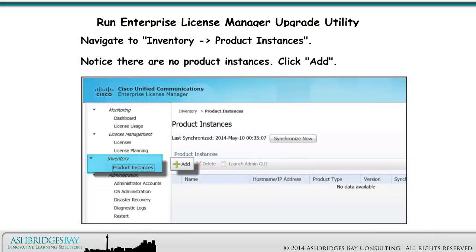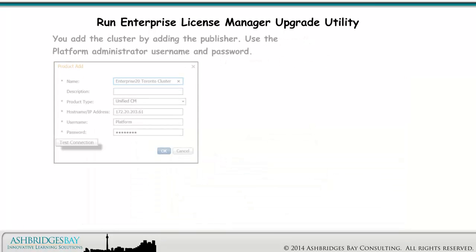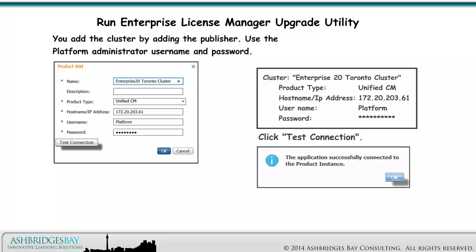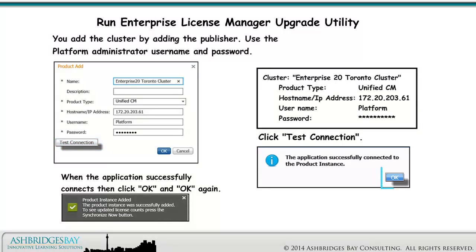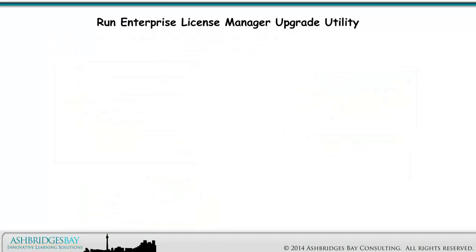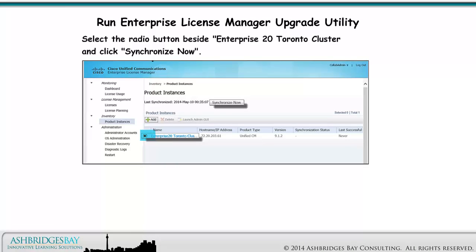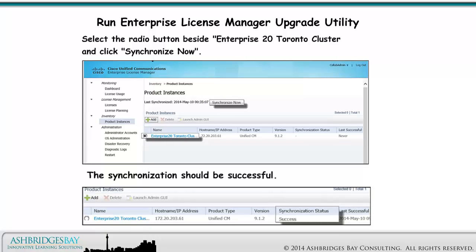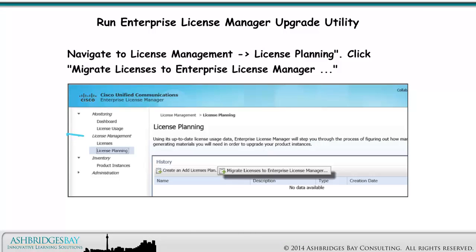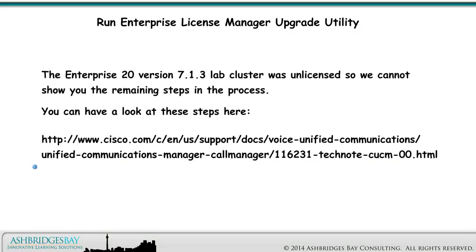Navigate to Inventory > Product Instances. Notice there are no product instances. Click Add. You add the cluster by adding the publisher — use the Platform Administrator username and password. Click Test Connection. When the application successfully connects, click OK and OK again. Select the radio button beside Enterprise 20 Toronto Cluster and click Synchronize Now. The synchronization should be successful. Navigate to License Management > License Planning. Click Migrate Licenses to Enterprise License Manager to migrate the older licenses. Note: the Enterprise 20 version 7.1.3 lab cluster was unlicensed, so we cannot show you the remaining steps in the process.